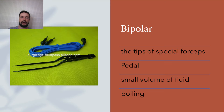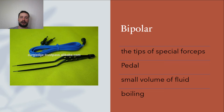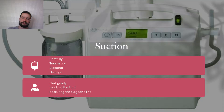Bipolar diathermy involves electrical current flowing between the tips of special forceps applied to the bleeding point by the surgeon. The assistant may be asked to activate the current via a foot pedal and may be required to keep the tips moist by application of a small volume of fluid. The goal is to apply enough fluid to allow coagulation at the tips of the forceps, avoiding flooding by under or over application.